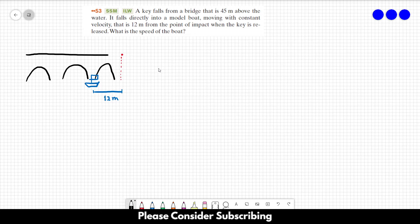That's what we want to know. It's pretty simple. We will calculate delta t, the time it takes for the key to reach the water. Then, since the speed of the boat is constant, we will use V equals delta x over delta t. That's it.